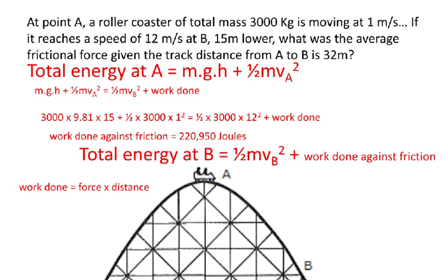We know that work done is equal to force times distance. We also know our distance is 32 metres. So the work done equals the force times the distance. We know the work done and the distance, so by rearranging our equation, we can find out the force. We find the average resistive force is 7092 newtons.